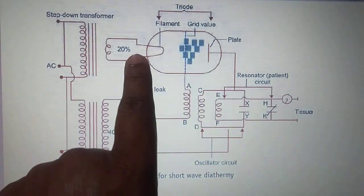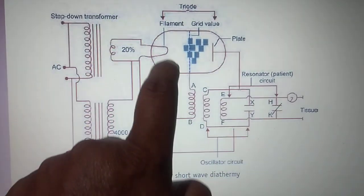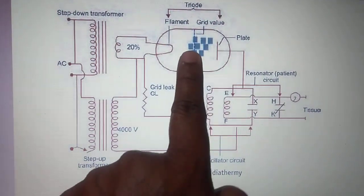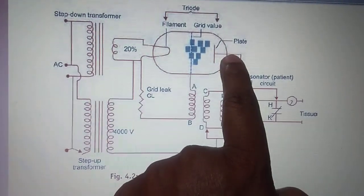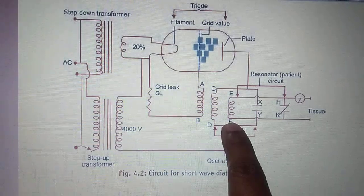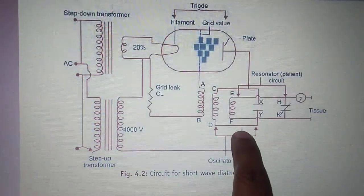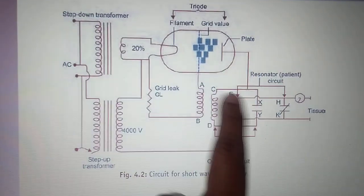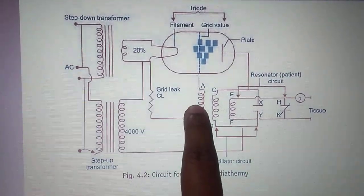We will talk about the working later on. Then it is connected to a grid valve, and this is a vacuum area. Then a plate anode is connected to a coil, and the coil is CD. Then this coil is again getting connected to the step-up transformer. So this is the basic structure.